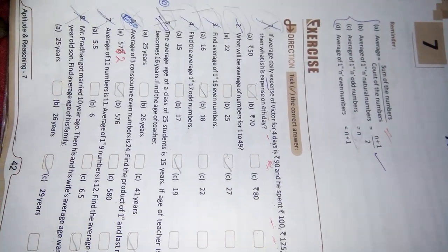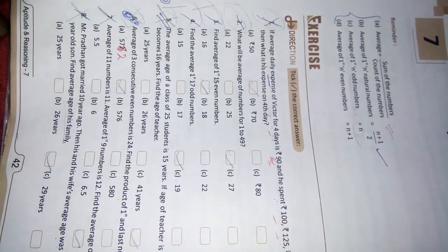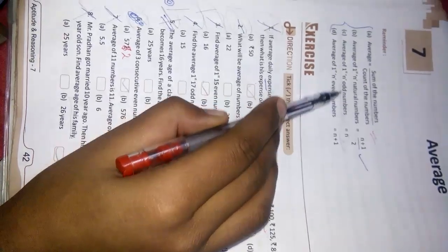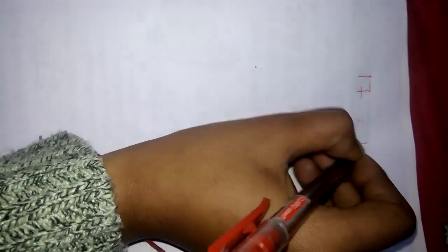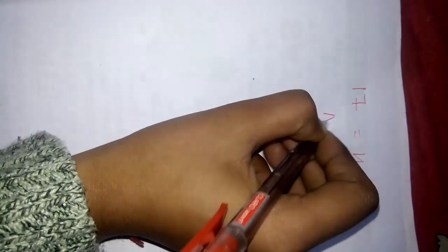Next question is, find the average of first 17 odd numbers. 17 is an odd number. And the question is also asking about odd numbers. So, here you will use the formula of odd numbers. That is n. For average of odd numbers, it is always equal to the number. So, its average will be 17.